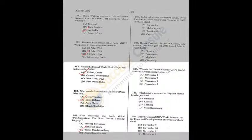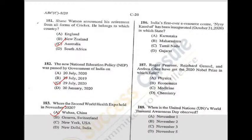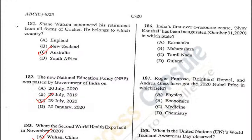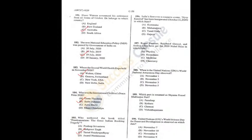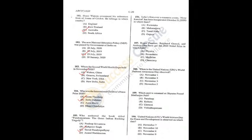Question 186: India's first ever e-resource centre, Nyay Koshal, was inaugurated in Nagpur, Maharashtra — B is the correct answer. Question 187: Roger Penrose, Reinhard Genzel, and Andrea Ghez received the 2020 Nobel Prize in Physics for their work on black holes — A is the correct answer. Q186 = B, Q187 = A.